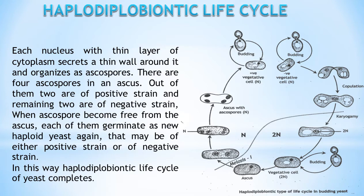When ascospores become free from the ascus, each of them germinates as a new haploid yeast, that may be of either positive strain or negative strain. In this way, the haplodiplobiontic life cycle of yeast completes.